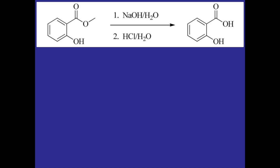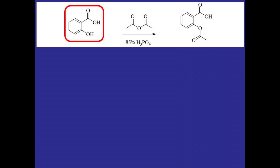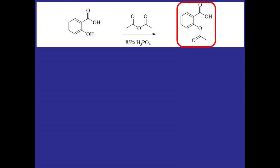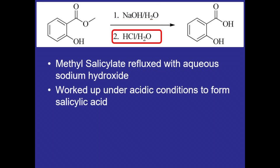The first step will be taking methyl salicylate, also known as wintergreen oil, and forming salicylic acid. In the second step we'll take that salicylic acid and form aspirin. In the first step, methyl salicylate will be refluxed with aqueous sodium hydroxide, which will substitute the ester with the carboxylic acid group through a tetrahedral intermediate, then worked up under acidic conditions to fully form the salicylic acid product.